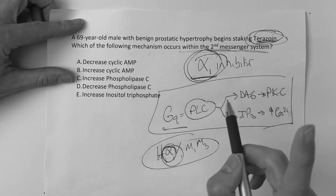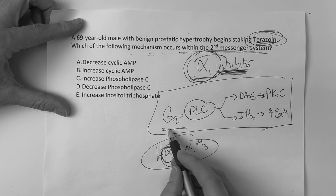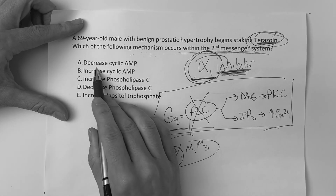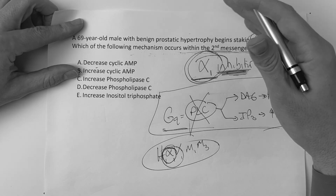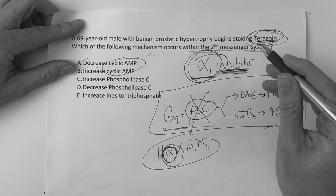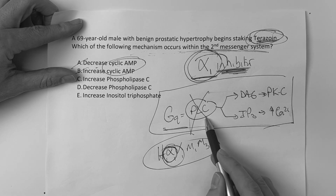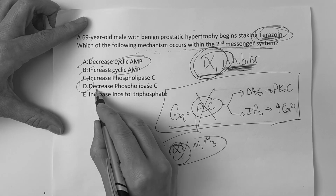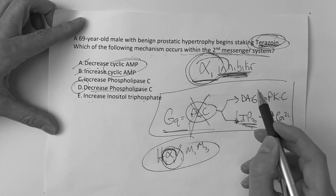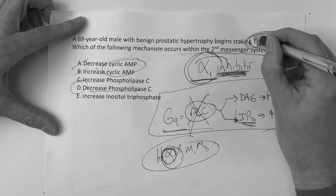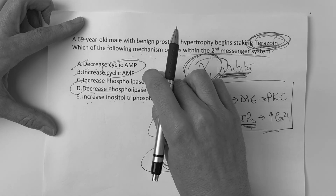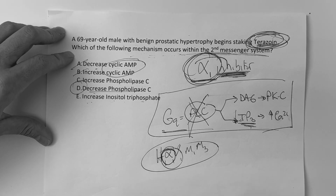But remember — prazosin is an inhibitor, so everything goes down. Is it a decrease in cyclic AMP? No, that's GS/GI. Increased cyclic AMP? No. Increased phospholipase C? No — it's a decrease in phospholipase C because it's an inhibitor. Increased IP3? No — it's a decrease. The answer requires knowing the medication, knowing it's an alpha-1 inhibitor, placing it in GQ, and recognizing inhibition decreases the whole pathway. Know GS, GI, GQ — do it that way and you get all the questions right.